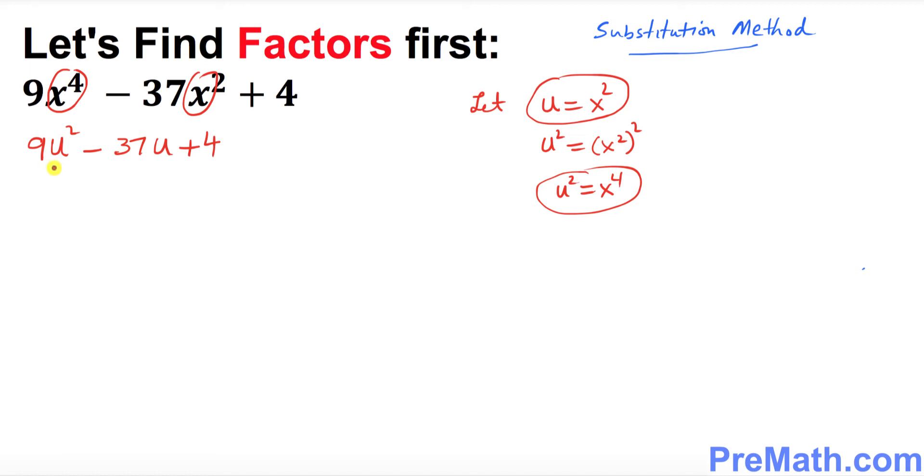See this looks a lot simpler now. It's a quadratic expression with a u variable. So let's go ahead and find the factors for this one. What are the possible factors? The possible factors are 9u minus 1 and the other one is u minus 4.